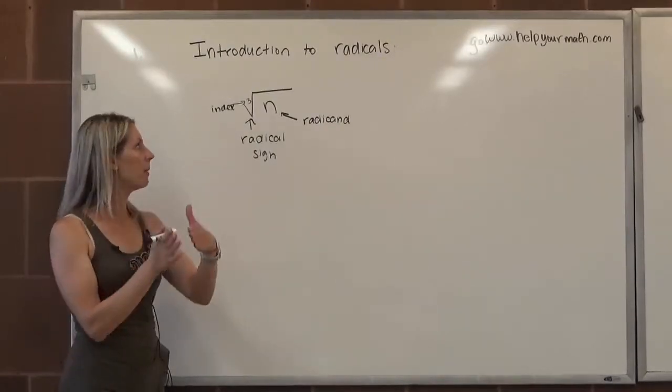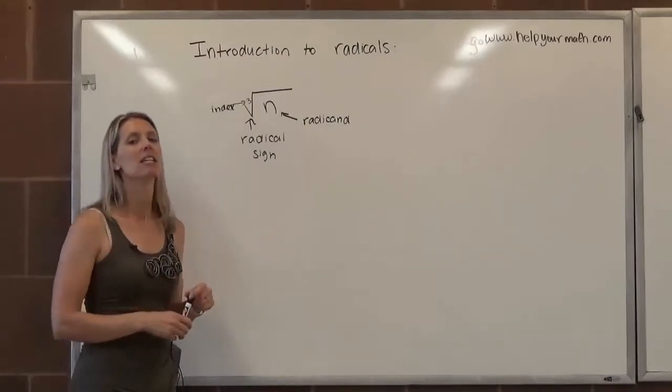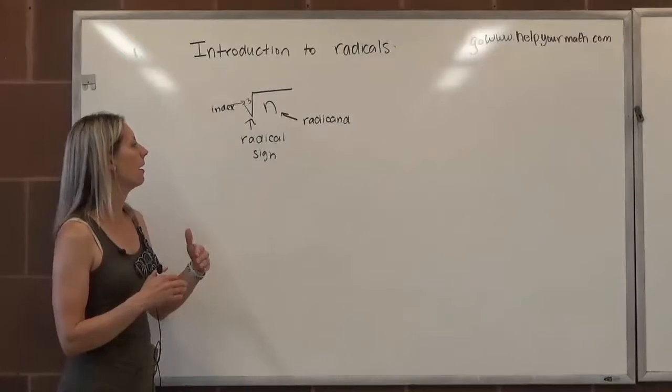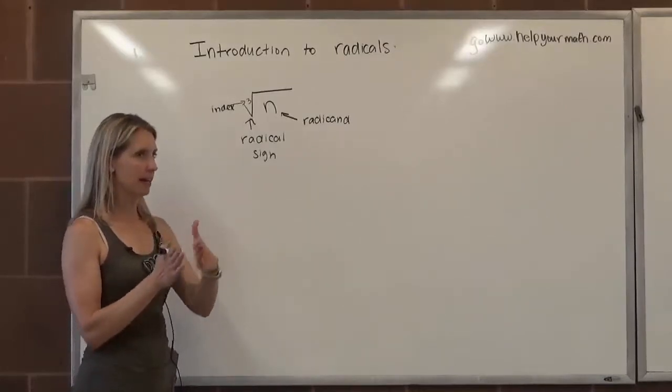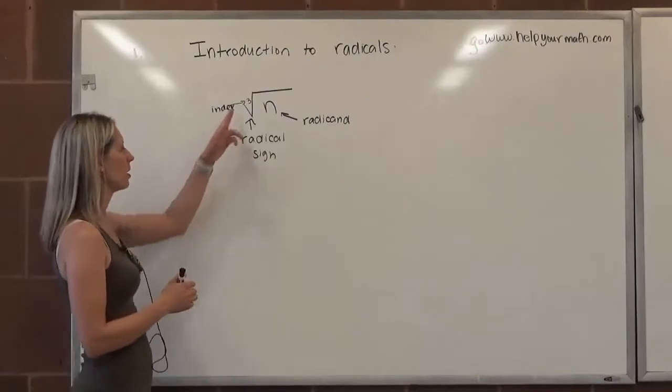So that would be what number, so we'll say x times x times x is equal to n. So what number, when you multiply it to itself twice, so x times x times x, x cubed is equal to n. That would be the cubed root.